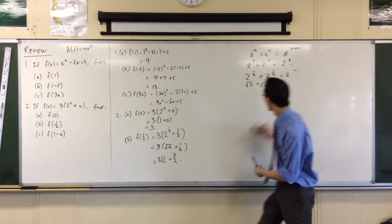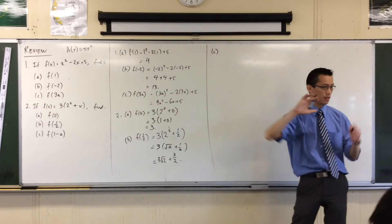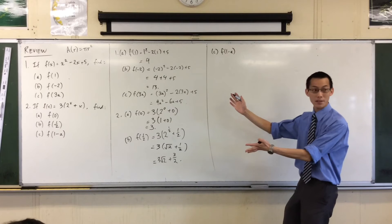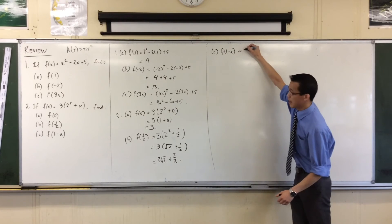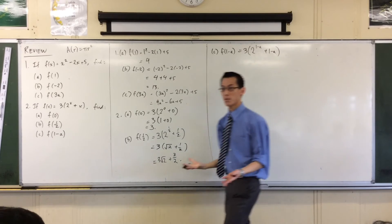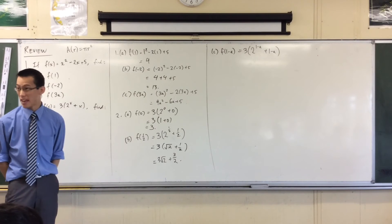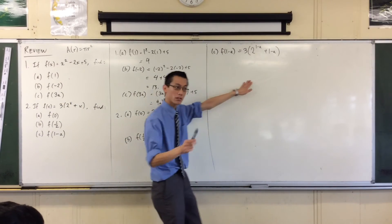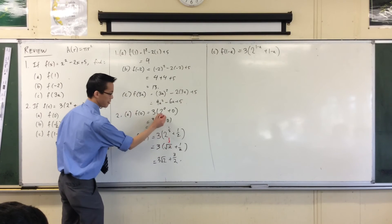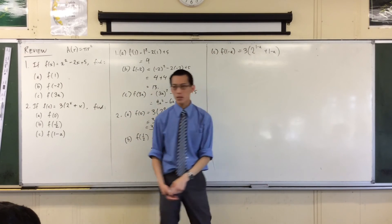Now the last one — we've got some more algebra in there, but be careful because it's a little bit sneakier. When I go f of (1 minus a), I take all the x's and replace them with (1 minus a). So I get 3 times 2 to the power of (1 minus a), plus (1 minus a). Now I want to interpret what's happening with this index — 2 to the power of that weird expression. There's a corresponding index law for division: when you divide numbers with the same base, you subtract the indices — just as multiplication corresponds to adding indices.